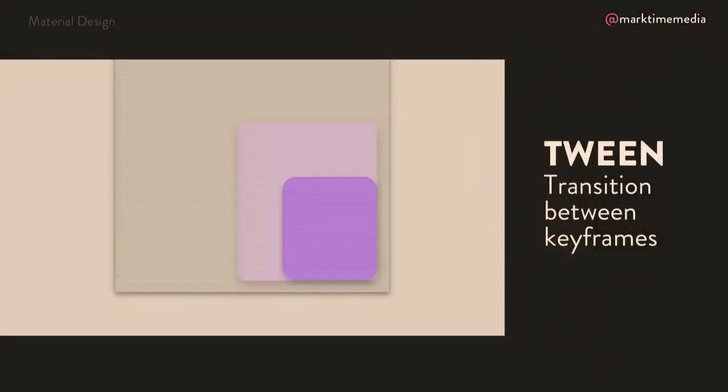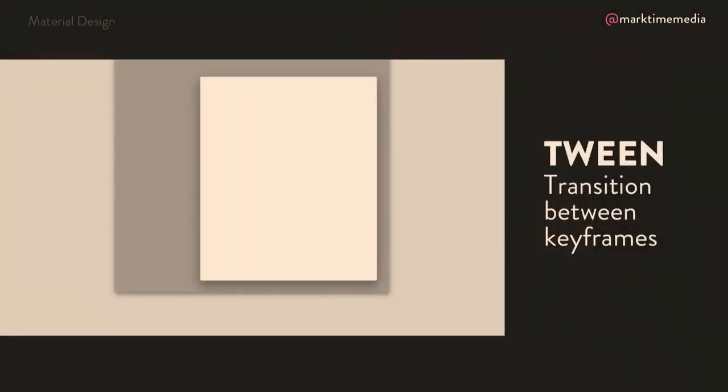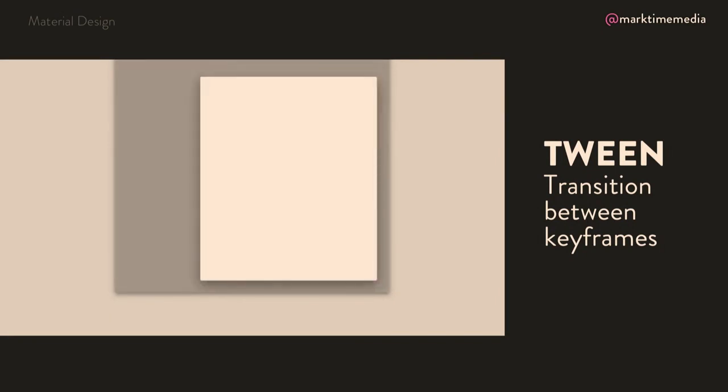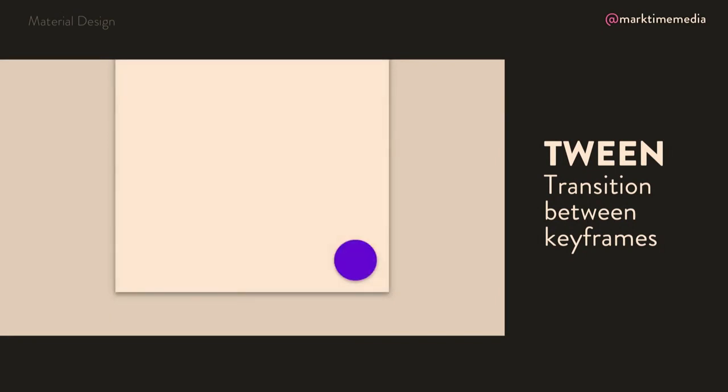Then we have a concept called a tween — this is the transition between keyframes. If you remember straight ahead action and pose to pose, this is basically when all of those elements transition between each other. For example, here we've got the purple circle turning into the white square that is larger — we're transforming shape, color, and scale, the background is transforming opacity — there's a lot of tweening happening. So tween is basically a term for when things transition between keyframes.